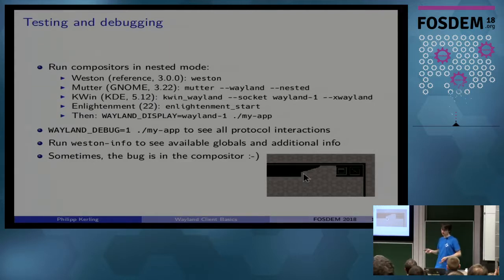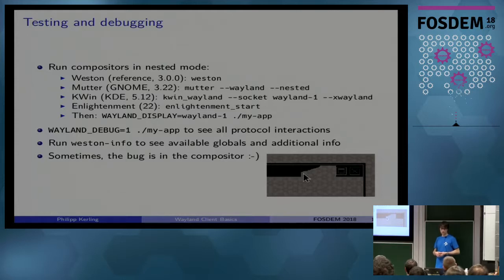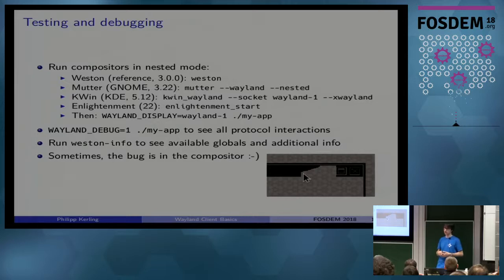I would always advise you to test at least on Weston, because it is the reference compositor and is most strict about the protocol. You might want to skip KDE and Enlightenment for the moment, because they don't have a stable released version that supports xdg_shell version 6, as far as I know, but they are working on it.